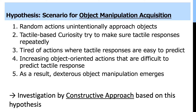We hypothesize a scenario for object manipulation acquisition in human development. First, random actions by an infant unintentionally approach objects. Tactile-based curiosity then tries to confirm tactile responses repeatedly. Infants get tired of actions where tactile responses are easily predicted, and internal rewards lead to an increase in actions that are difficult to predict tactile responses for. As a result, dexterous object manipulation emerges.